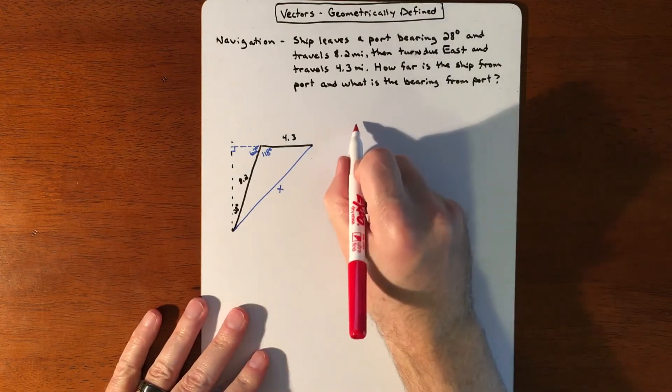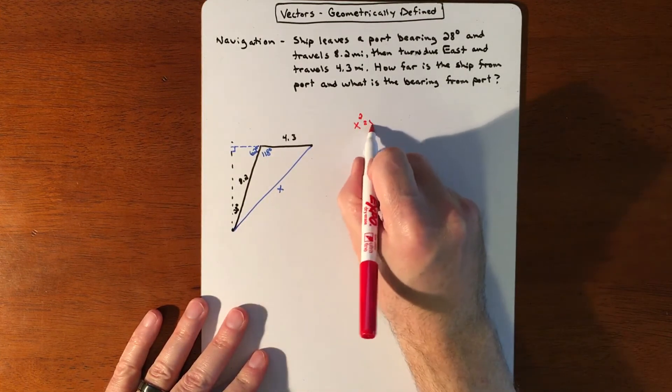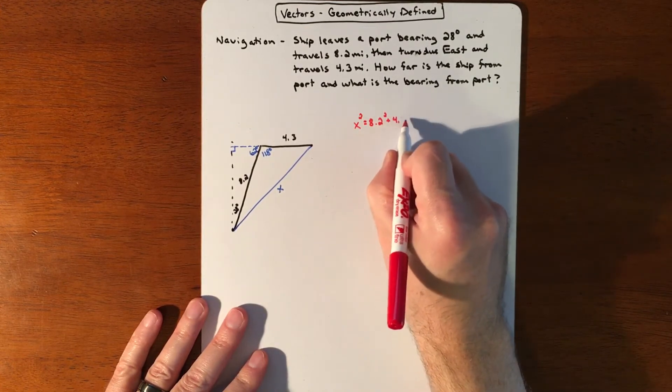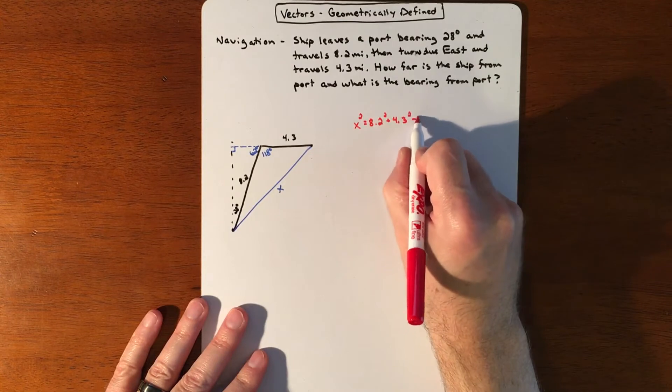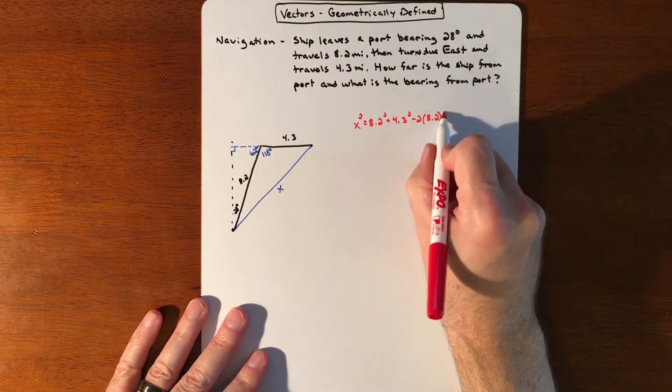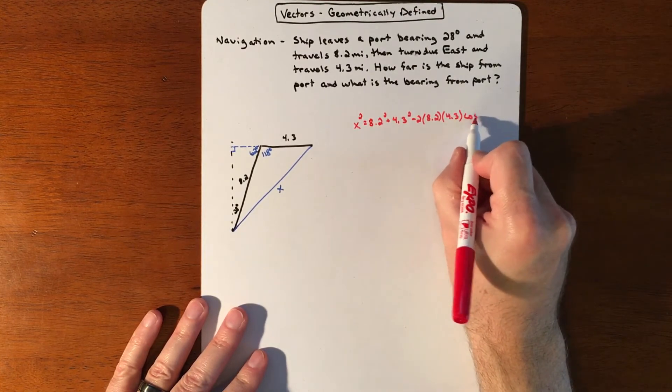So let's do the law of cosines. We would take x squared is going to equal 8.2 squared plus 4.3 squared minus two times those exact same two numbers, 8.2 and 4.3, and then times cosine of the angle in between.